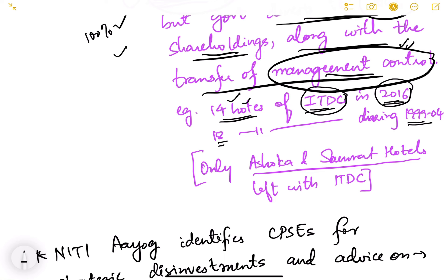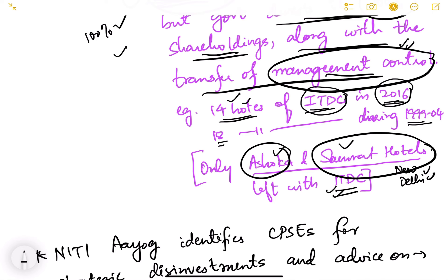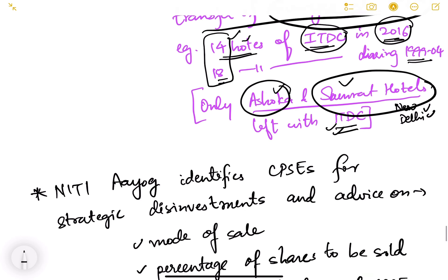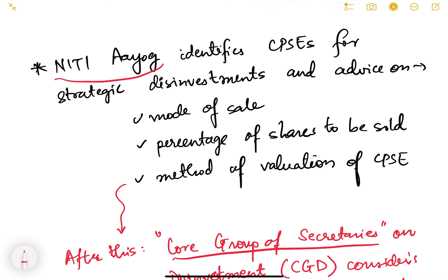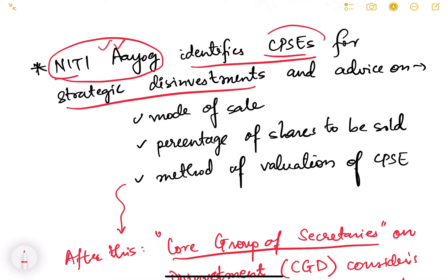An example of privatization: 14 hotels of ITDC (India Tourism Development Corporation) were sold in 2016. Initially, 18 hotels of ITDC were sold between 1990 and 2004, and then another 14 hotels were sold in 2016. Only 2 hotels — Ashoka and Samrat Hotel in New Delhi — remain with the government, still managed by ITDC. The remaining 32 hotels have already been sold to private players.